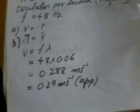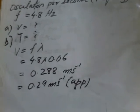And we have to find two things: the velocity and the time period. The formula for the velocity is V = fλ.